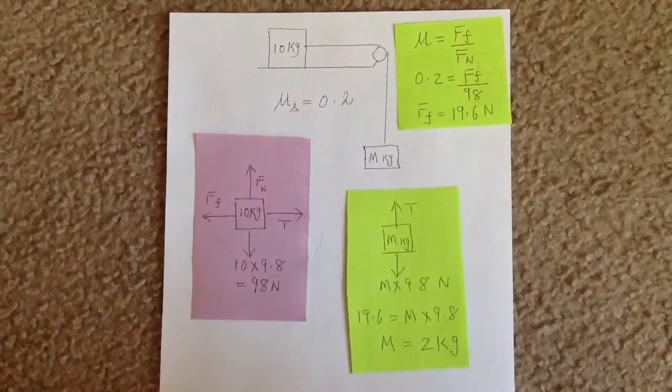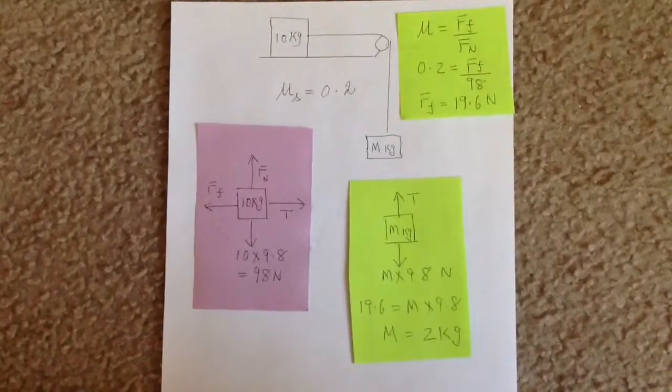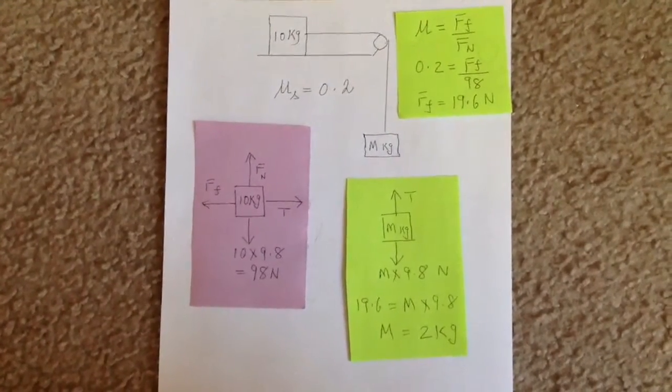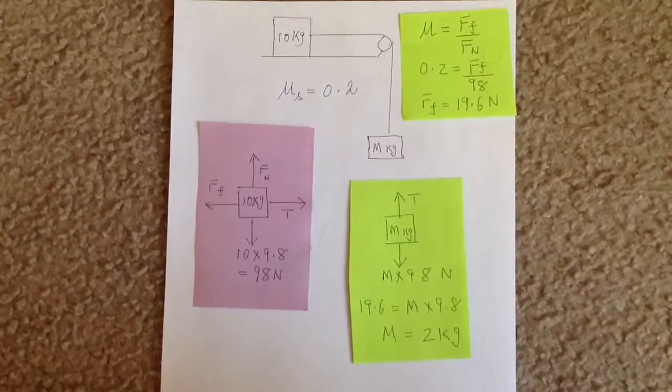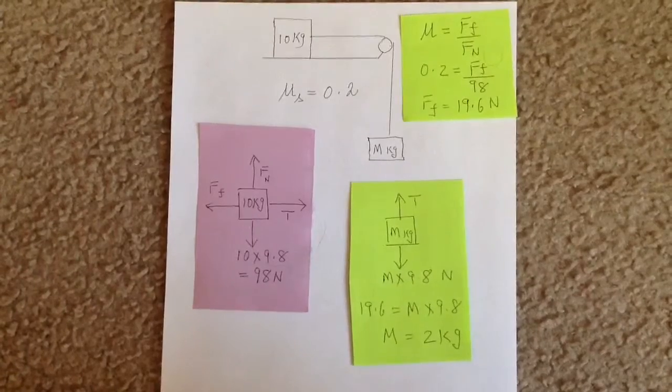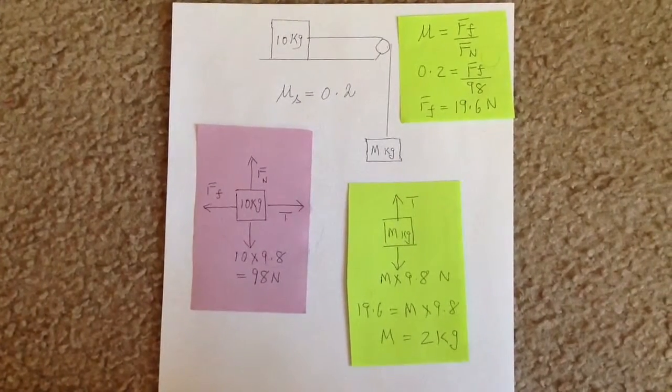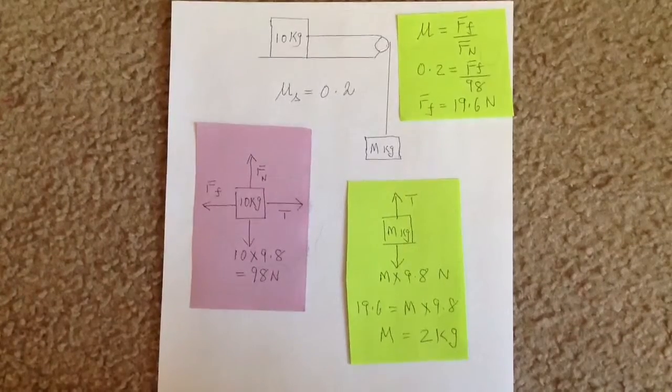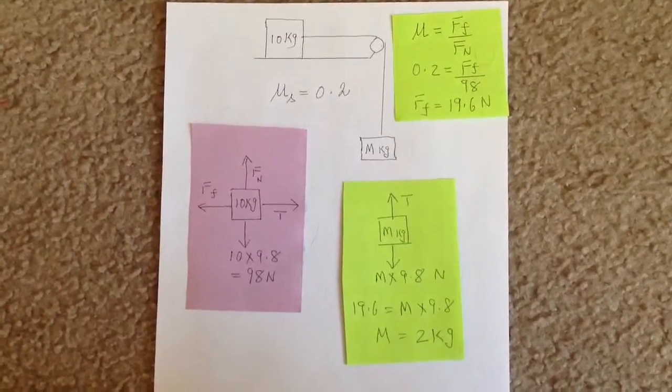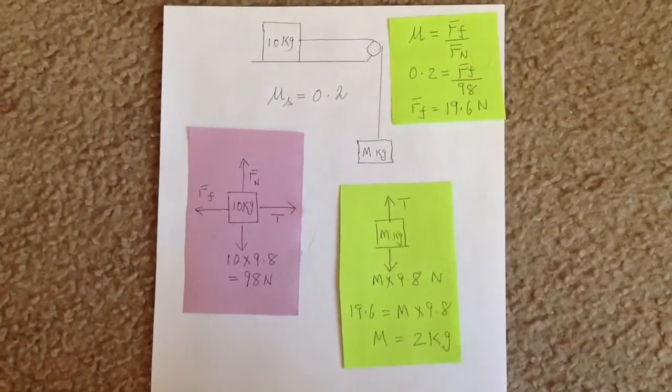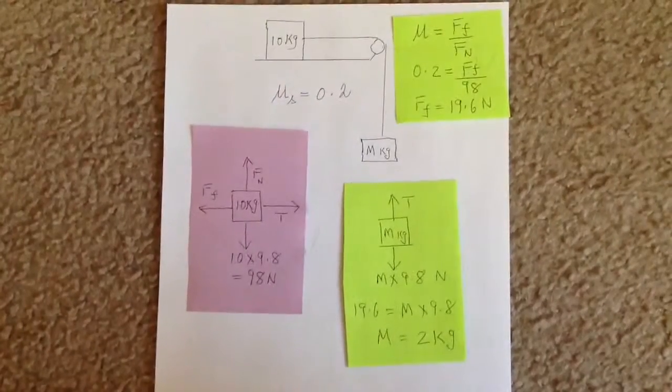Now, let's take a look at the object whose mass is m kg. There are two forces acting here. There is tension acting in the upward direction, and there is a downward force due to gravity, which is m times 9.8 newtons. Because the system is in equilibrium, the tension must equal the downward force.